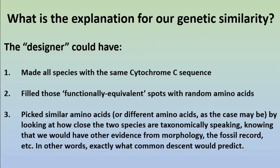So what could the designer have done when sitting down to design these sequences? Firstly, he could have made all species have the same cytochrome C sequence — that could not be used to imply common descent. He could have filled those functionally equivalent spots with random amino acids — again, that could not be used to imply common descent. Or he could have picked similar or different amino acids depending on how closely the two species are related taxonomically, knowing that we would have other evidence from morphology, the fossil record, and biodiversity — in other words, by putting amino acids there to match exactly what we would predict if common descent were true.